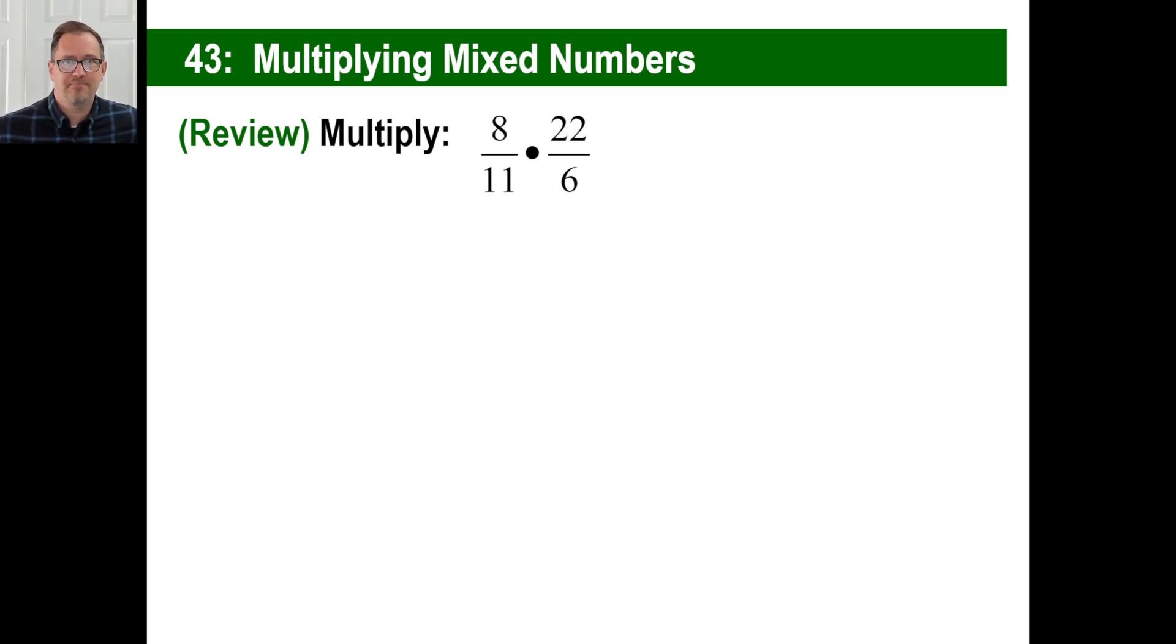Hey y'all, let's take a look at multiplying mixed numbers. Let's just go back and do something very quickly. When you see something like this, the easiest thing to do is, as much as you can, cancel out. Way easier. So if you see 8/11 times 22/6, just go ahead and cancel that and go, that's 2 over 1.